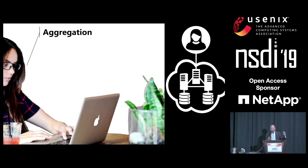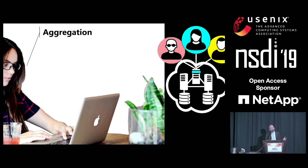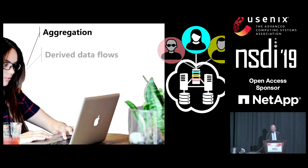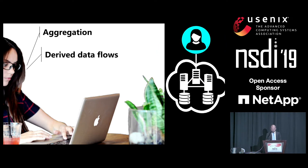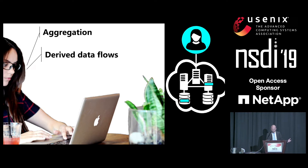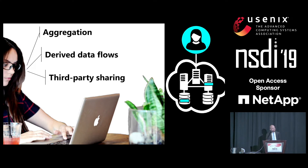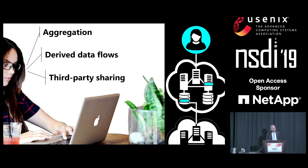So if we go back to the example of our user, let's think about the questions she might ask about her data. She might ask about aggregation: given a service with multiple users, how is her data combined with others to extract cross-user insights? She might also worry about derived data flows — when she uploads data, the initial server might copy it and send copies to additional servers that may persist data on storage. And she might be concerned with third-party sharing: how can she restrict those kinds of third-party data flows?